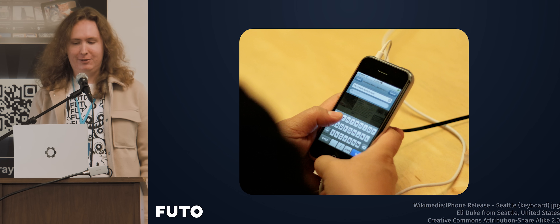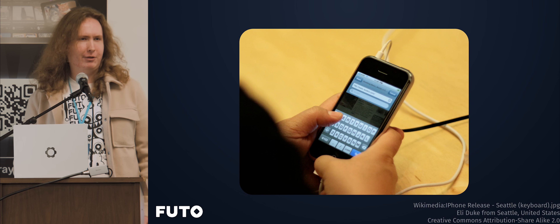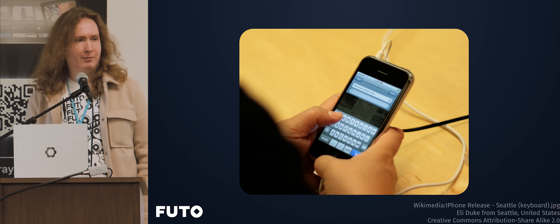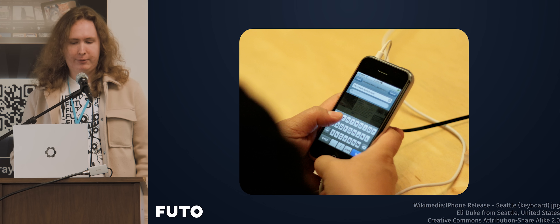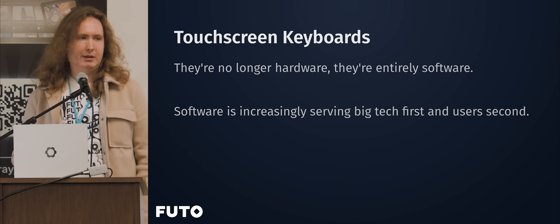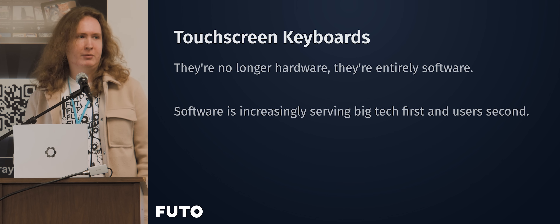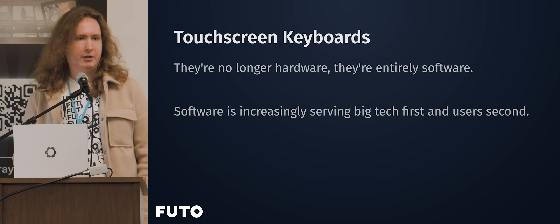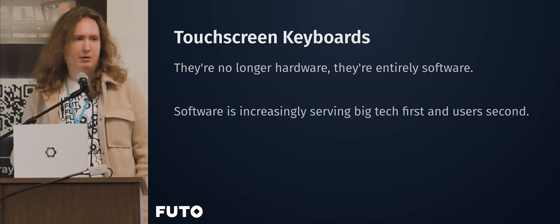And then touchscreen phones were invented, and now the keyboard no longer exists as a physical entity. There's an app on the phone that looks and acts like a keyboard, but it's just a piece of software. And the thing about software is that it can work against you in hidden ways — it can work to serve the companies. As we've seen over the past decade, software has become increasingly developed to serve its creators more than the users.